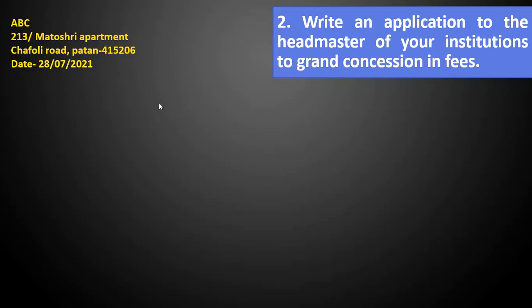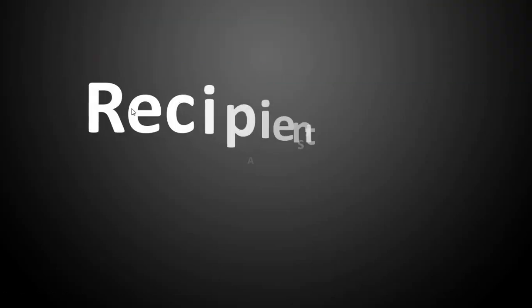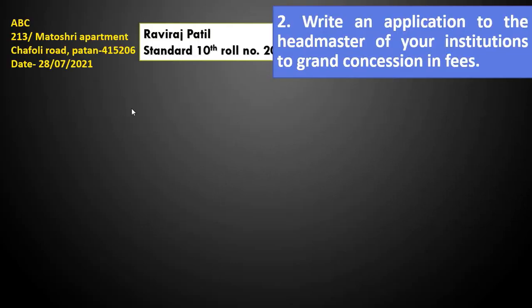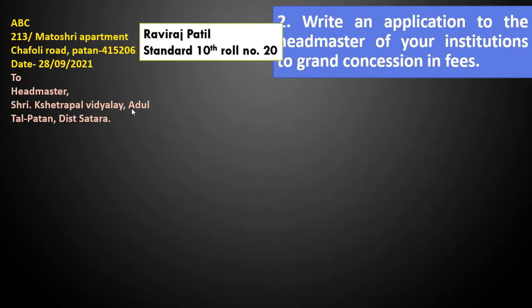You will get half a mark for this. Since you are writing a letter to your headmaster, you can write your address as: Raviraj Parti, Standard 10th, Roll Number 20. Keep one address ready with you to write a letter. Our next part is recipient's address. You are writing to the headmaster, so write: To the Headmaster, Shri Kshetrapal Vidyalay, Adul Taluka, Patan District, Satara.